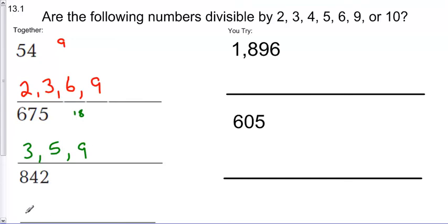842. Well, I know it's divisible by 2 because it's an even number. I've gotta add them up to see if it's divisible by 3. So that's 12, 13, 14. 14 is not divisible by 3. How about 4? Nope, because the last two numbers aren't divisible by 4. 5? Nope. 6? Nope, because there's not a 2 and a 3. 9? No. 10? No. Well, the only number it's divisible by is 2 that we see here.